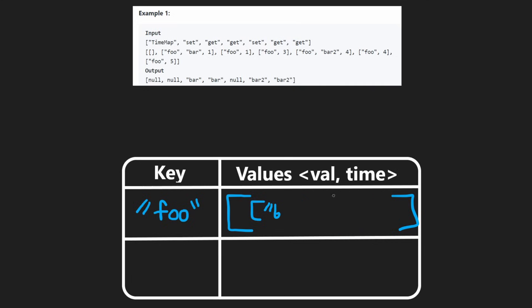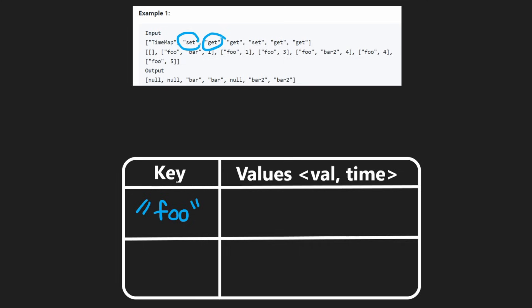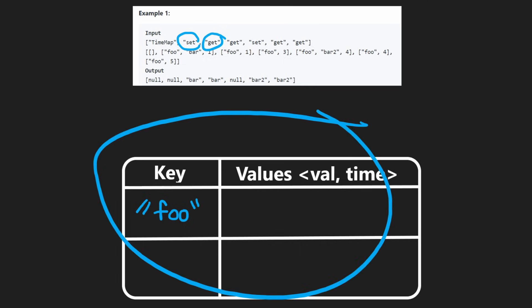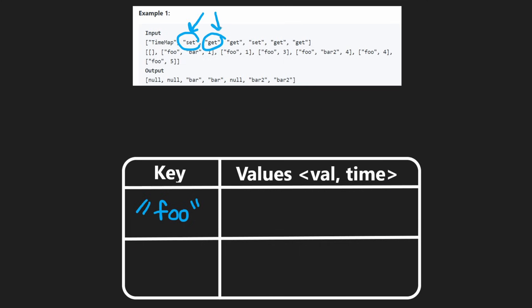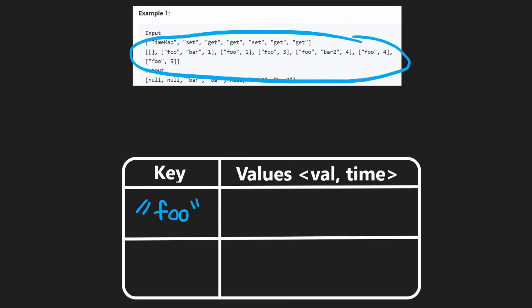So basically it's going to be a list of values, and the values themselves are going to be pairs — a value and a timestamp associated with that. It's not super complicated. The main operations we're going to support are actually pretty simple: just two operations, three if you count the constructor. We're going to have a constructor because it's a class we're designing. The two operations we want to support on this key value store are set and get, which is pretty straightforward.